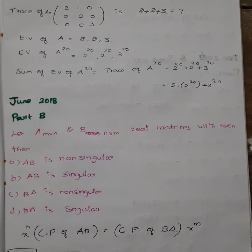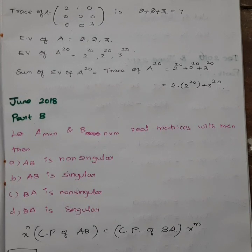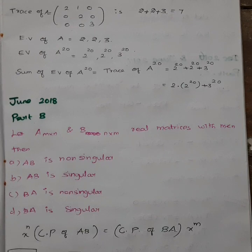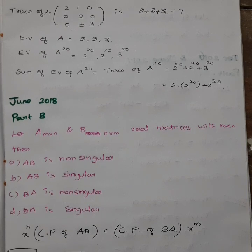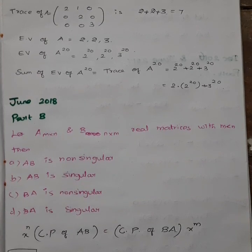First, we will check whether the AB matrix and BA matrix exist. If AB is defined, then the number of columns of the first matrix must equal the number of rows of the second. If A is an M×N matrix and B is an N×M matrix, then AB exists and so does BA. Now we check if the matrix is singular or non-singular. There is a normal relation: x to the power n.